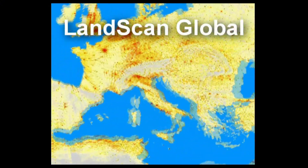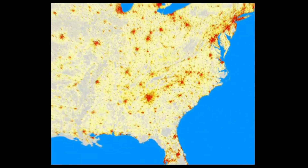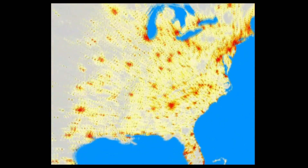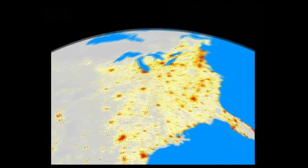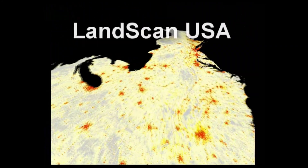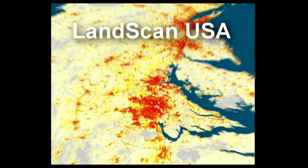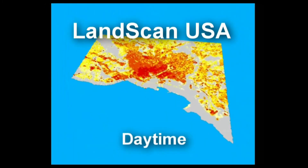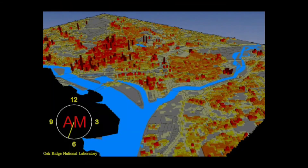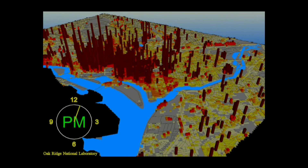In 2000, we extended the LandScan Global population distribution model and developed LandScan USA. As opposed to the model-based approach of LandScan Global, LandScan USA is a data-driven or bottom-up approach that maps existing infrastructure from a large number of data sets to describe human activities in space and time. That critical infrastructure includes schools, hospitals, and prisons.